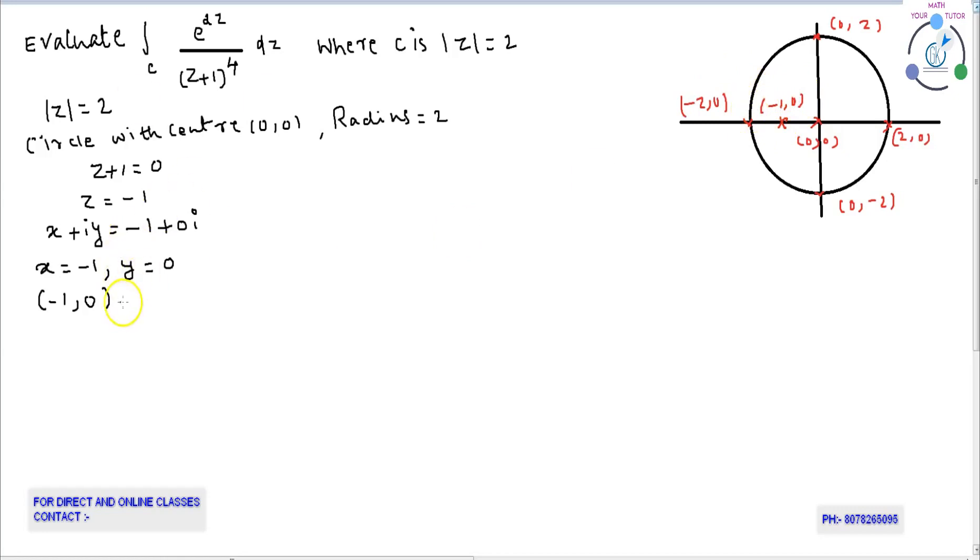(Minus 1, 0) lies inside the circle. Therefore, z equals minus 1 lies inside the circle mod z equal to 2.